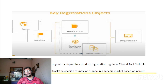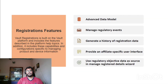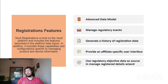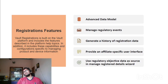In the notes section, activity is a child of the event object and tracks the specific country or change in a specific market based on the parent. Regarding registration features: Vault registration is built on the Vault platform and includes capabilities and configurations specific to managing product and device information. There are a couple of features — I'll share links so you can go through them in detail. One key feature is the advanced data model.